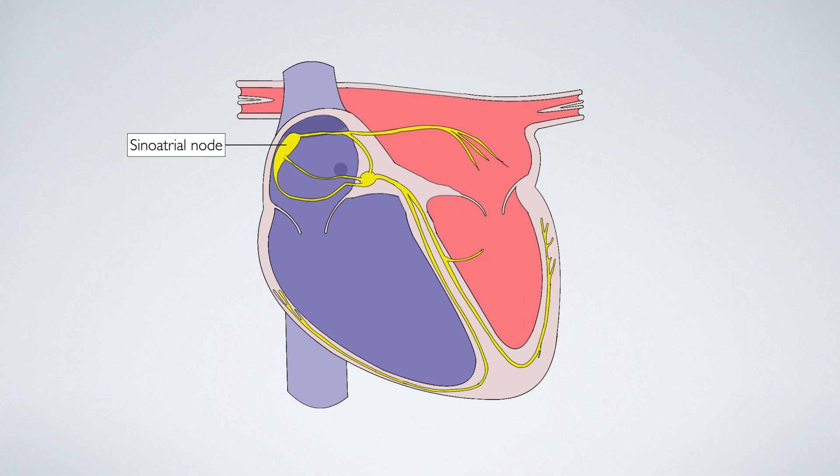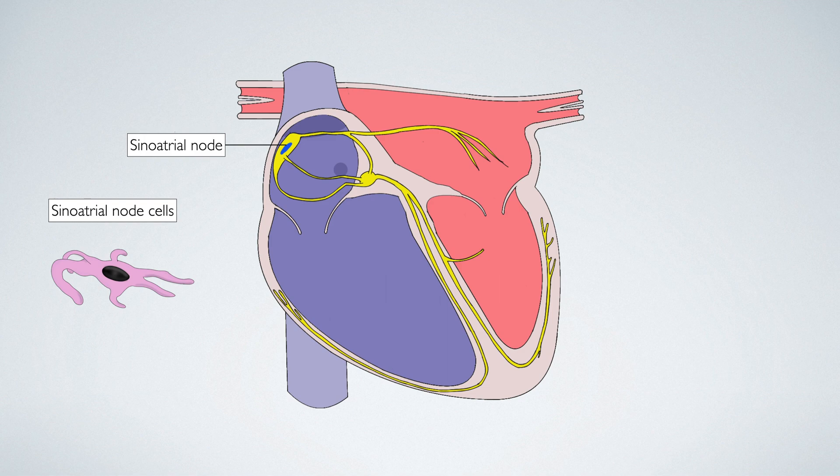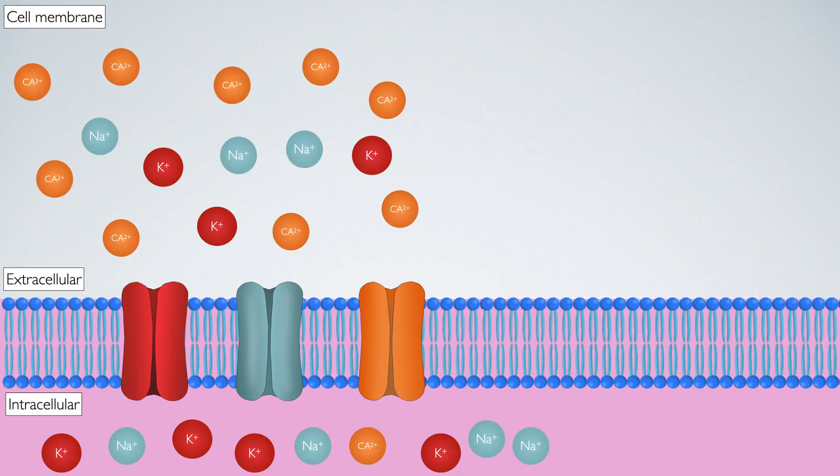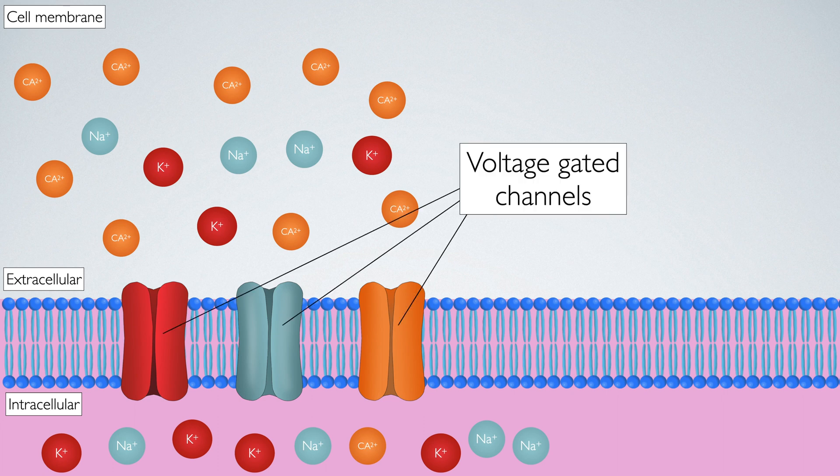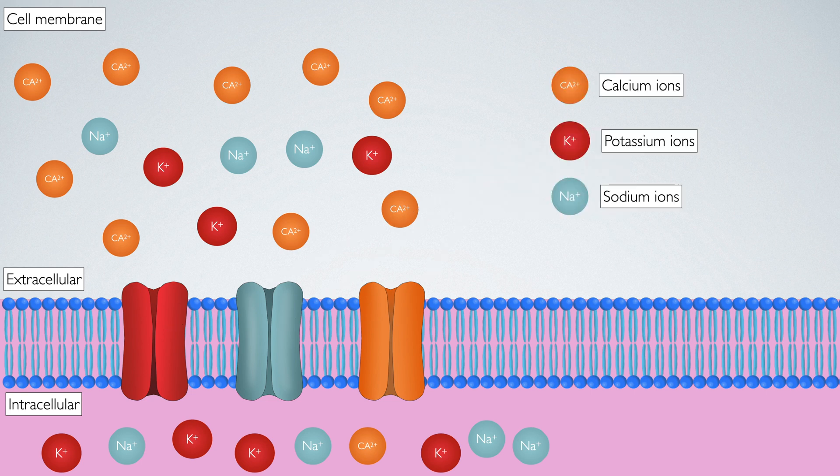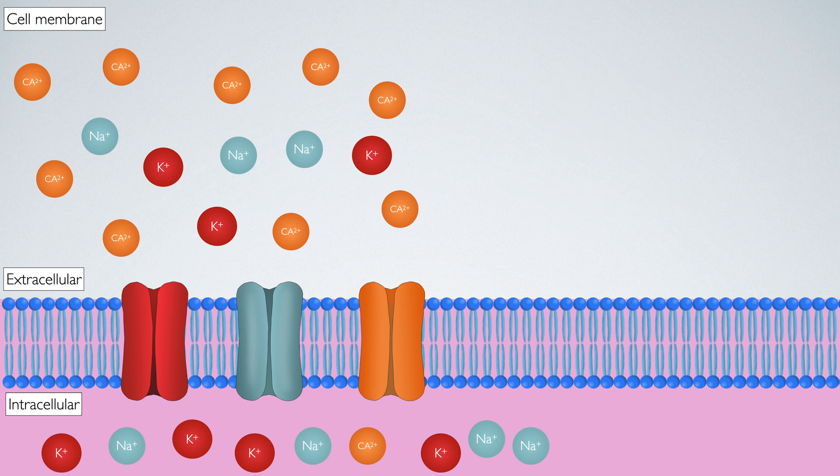The sinoatrial node has specialized cells that have evolved to generate impulses by controlling the net distribution of charged ions across their membrane. To illustrate this, here is an image of the sinoatrial node cell membrane. Note the voltage-gated channels. These will open and close depending on how positive or negative the cell is charged. Calcium, potassium, and sodium ions can also be seen in the extracellular and intracellular spaces.